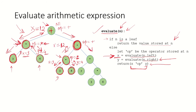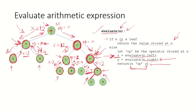Now we evaluate the right subtree of this node. Going left returns x equal to 7. Then evaluating the right subtree, we go left again: x=3 is returned, and y=4 is returned. The multiplication operator is performed, giving 12, which is collected in y for this node. So this node has received x=7 and y=12, and the multiplication operator gives us 84, which is returned.